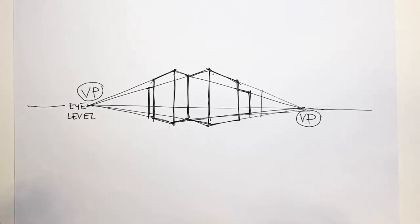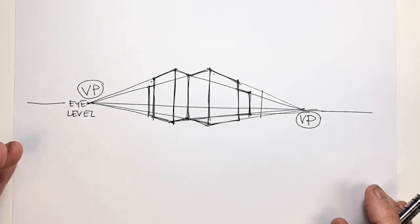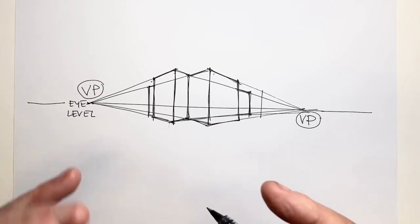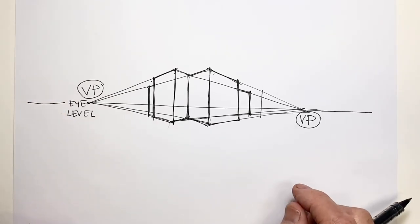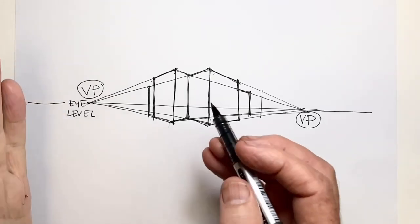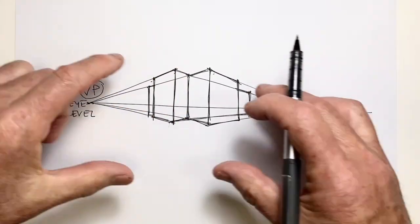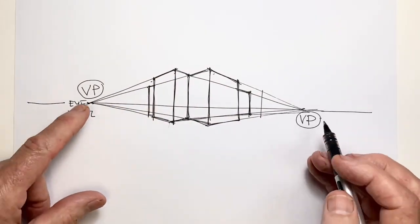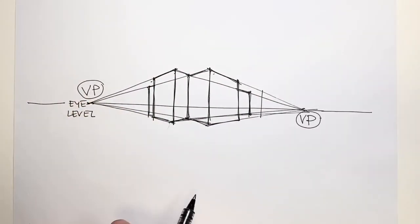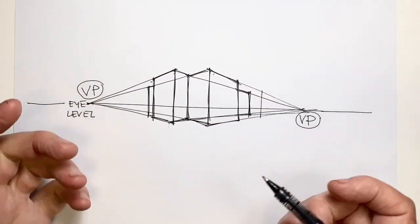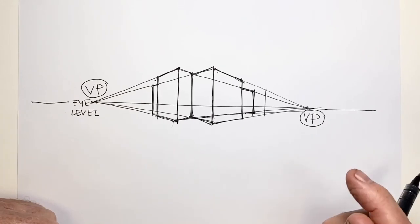Understanding the principles of two-point perspective can help us with more complex buildings as well, because all of the various planes all go back to the same two vanishing points. But again, how does this look in real life?